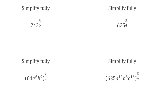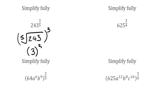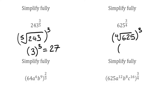Feel free to pause the video to have a go at the next questions. For 243 to the power of three fifths: we find the fifth root of 243, which is three, and then cube it — three cubed is 27. For 625 to the power of three quarters: the fourth root of 625 is five, and five cubed gives us 125.